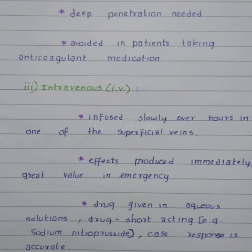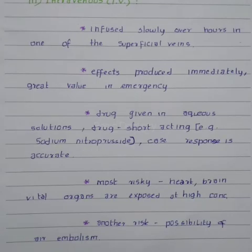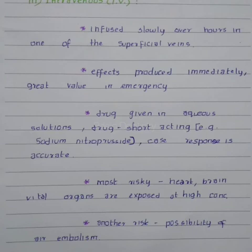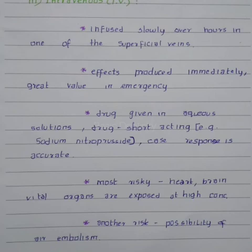Intravenous injection is infused slowly over time into one of the superficial veins and produces effects immediately, making it of great value in emergencies, mainly for syncope (fainting). Drugs are given in aqueous solutions and are short-acting; for example, sodium nitroprusside. Dose response is accurate with intravenous administration. However, it is the most risky route because vital organs like the heart and brain are exposed at higher drug concentrations, and there is a risk of air embolism with prolonged administration.